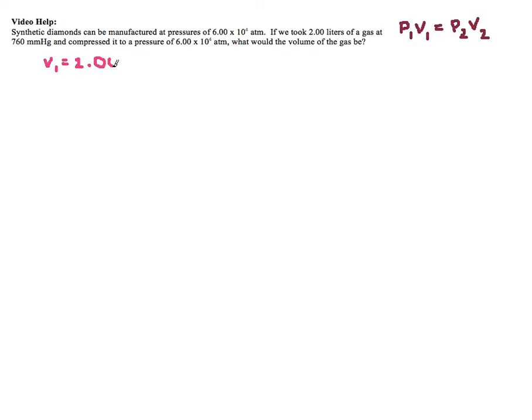If I took that amount of a gas at a pressure, so at P1 is 760 millimeters of mercury.